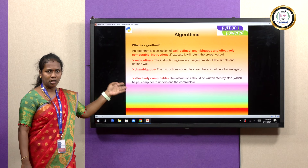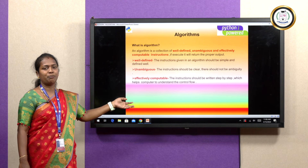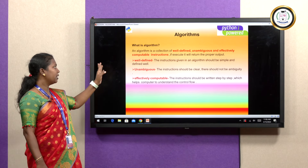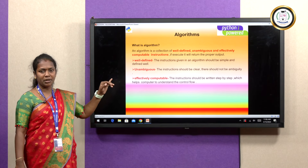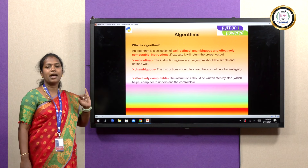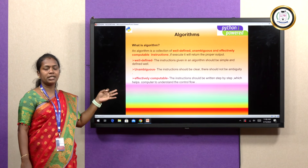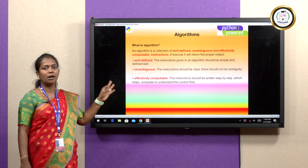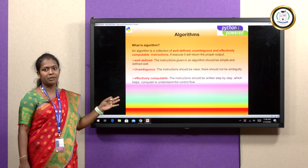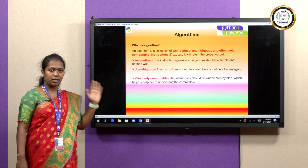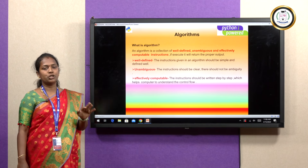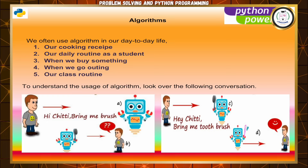Effectively computable means the instructions should be written step by step, and it helps the computer to understand the process. This is the algorithm. Remember these three words: well-defined, unambiguous, and effectively computable. If these three are satisfied, the algorithm is clear and will be understood by the computer easily.